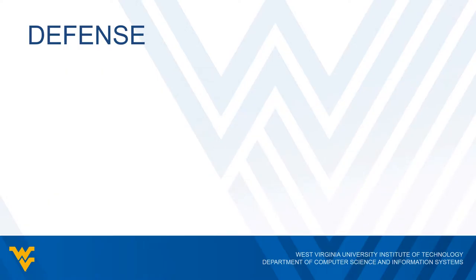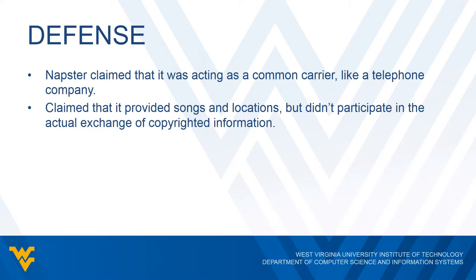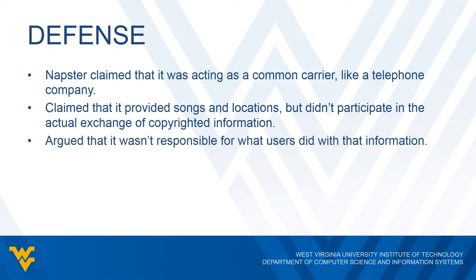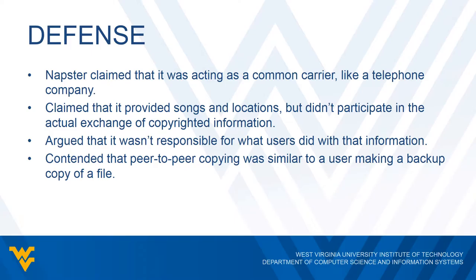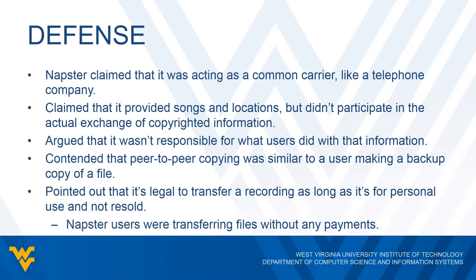In defense, supporters of Napster argued that the Napster system was merely acting as a common carrier, much like a telephone company. They claimed that Napster was simply providing information on songs and their location and did not participate in the actual exchange of copyrighted information, and therefore couldn't be held responsible for what peers did with that information. In addition, Napster contended that peer-to-peer copying was similar to a user making a backup copy of a file, pointing out that copyright laws allow a person who has purchased a recording in one format to transfer it to a different format for personal use as long as it was not resold. So Napster claimed that both peers in each swap were just transferring a file without payment, and therefore the copying should be considered fair use.